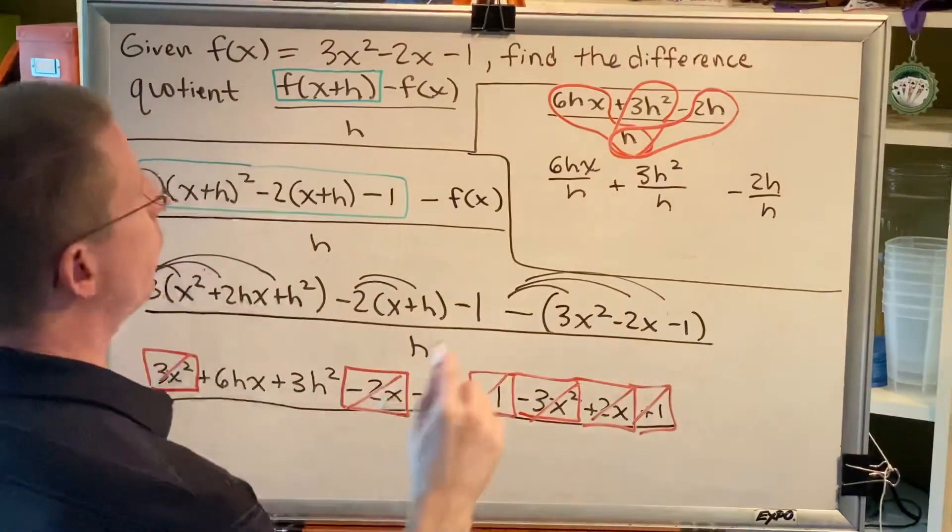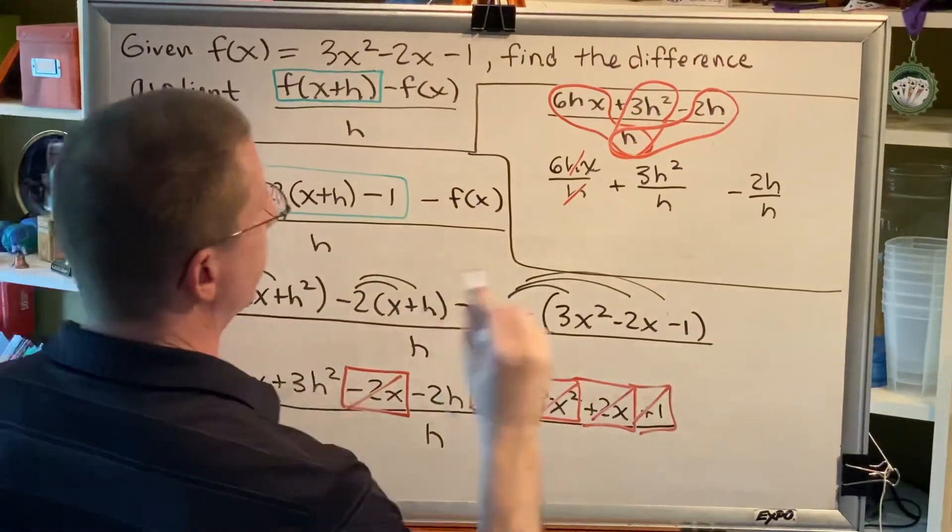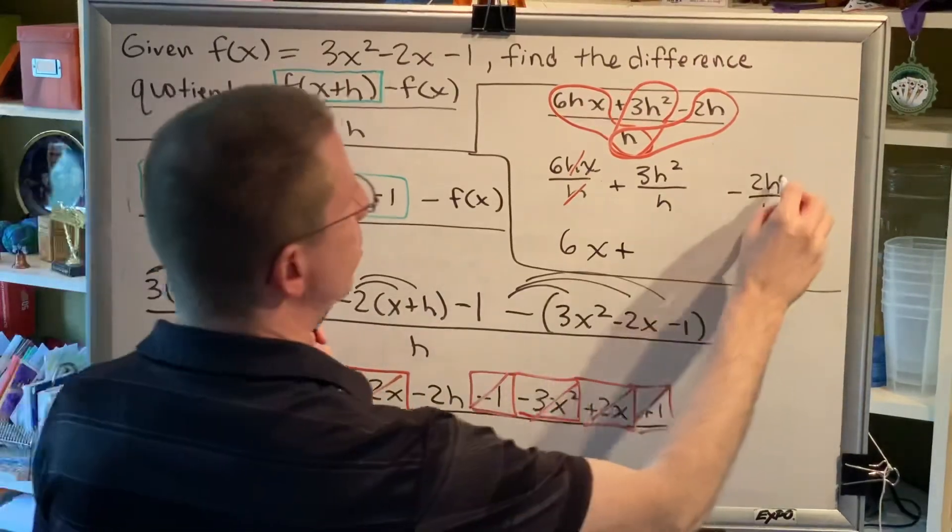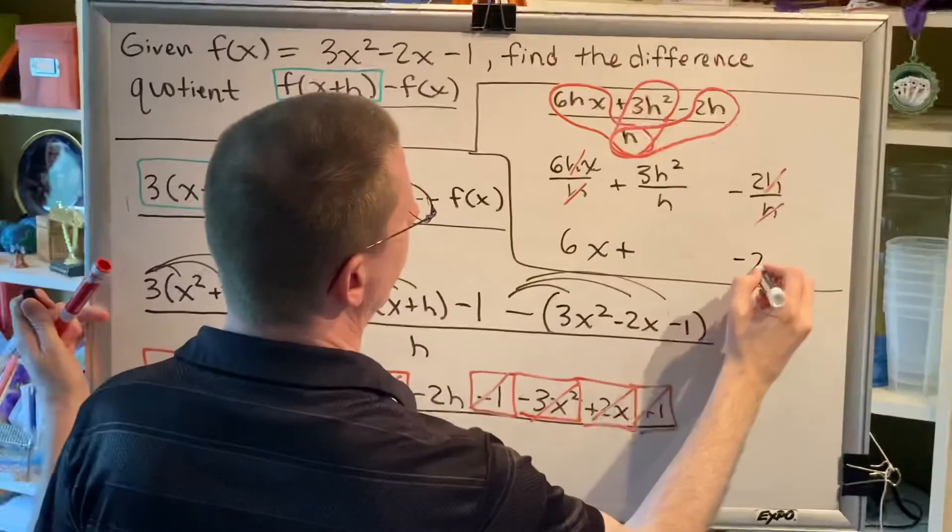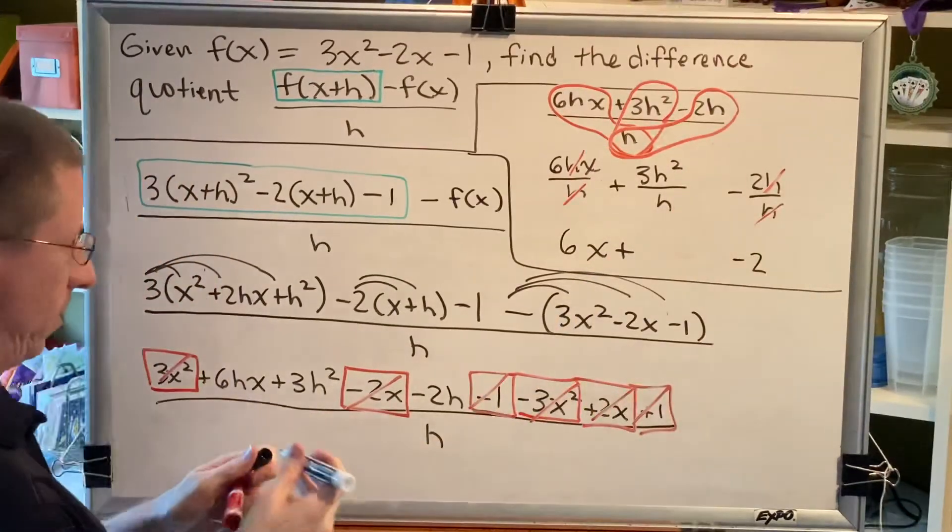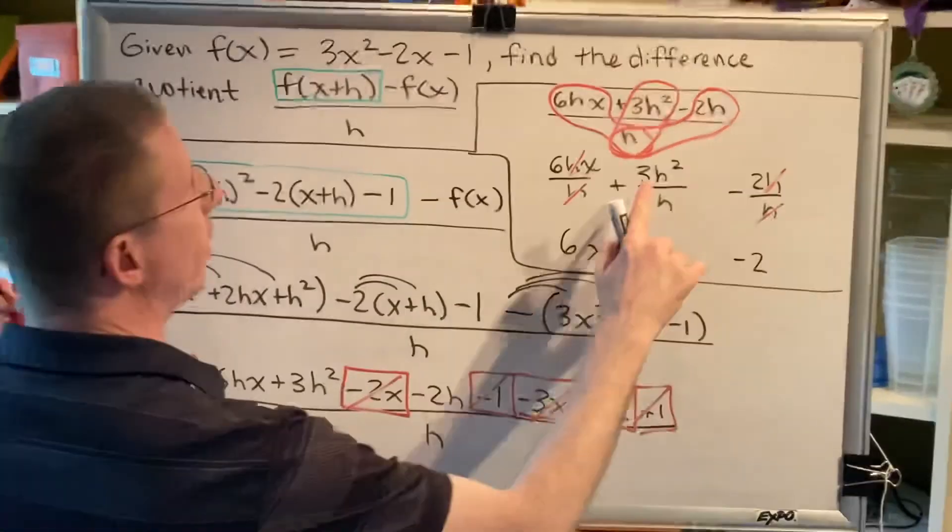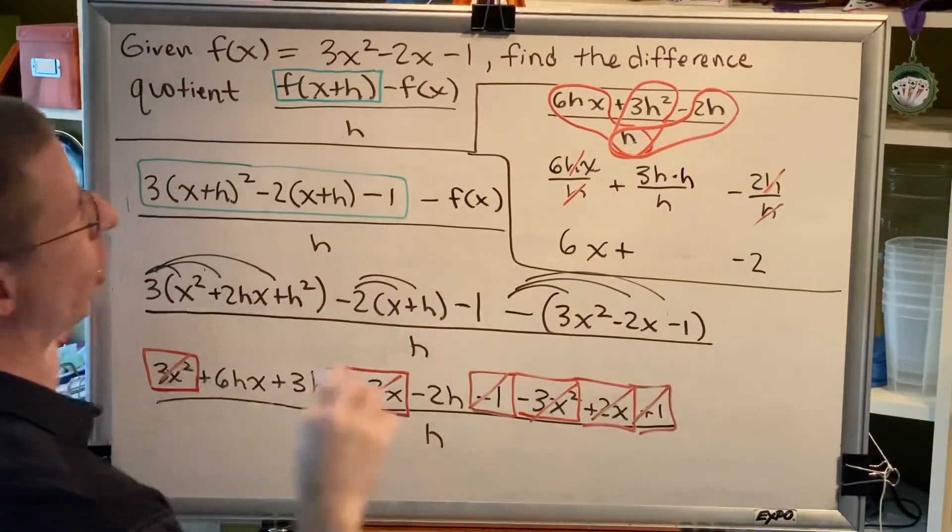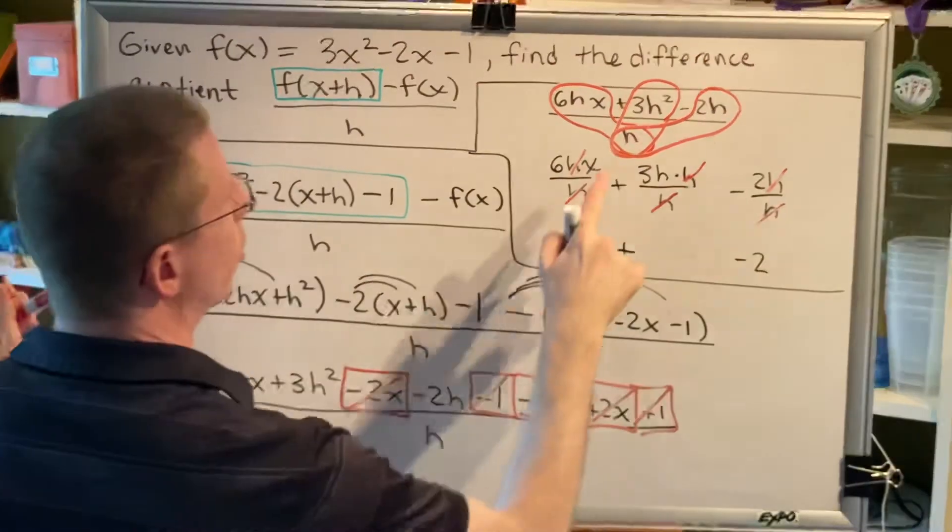In this first fraction, the h's cancel, and we're left with just 6x. In this last fraction, the h's cancel, and we're left with just 2. But in the middle fraction, we have an h squared versus an h, and those are not exactly the same. But one way to think about it is, h squared is kind of like an h times another h. And so if this h cancels with this one, what we're left with is 3h.